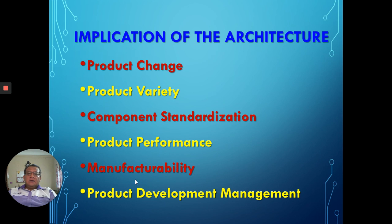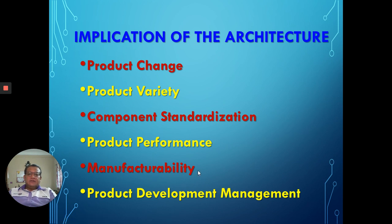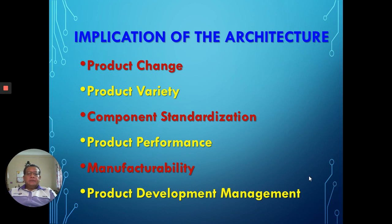Architecture influences product performance in terms of reliability — the more components you have, the more maintenance may be needed. In terms of manufacturability, modular architecture has higher assembly cost compared to integral architecture, which allows faster assembly. On the overall, either integral or modular architecture influences the product development program for future platform development and long lifecycle models.